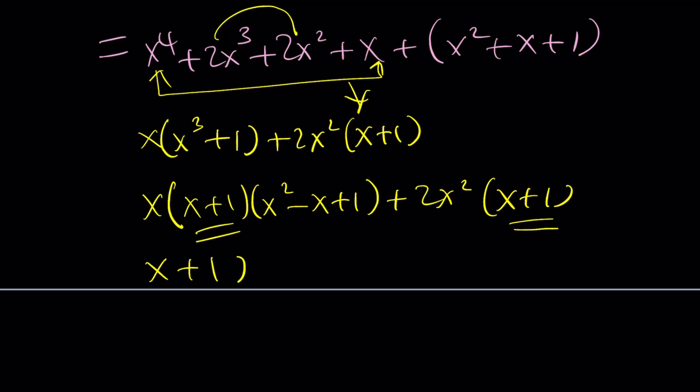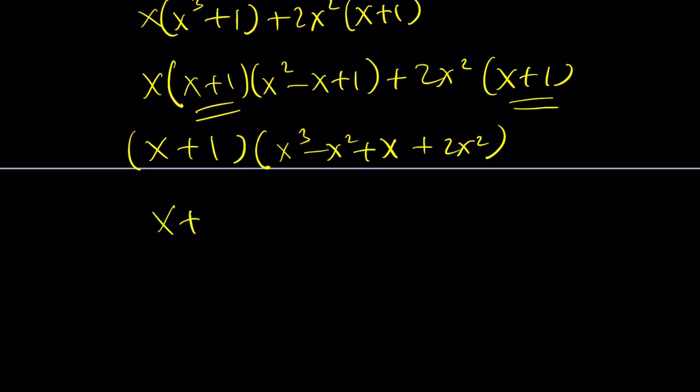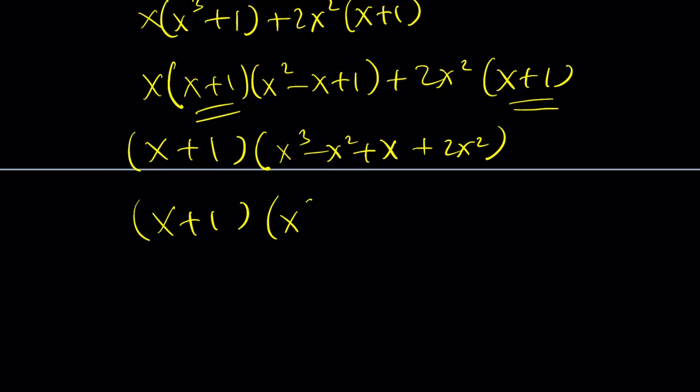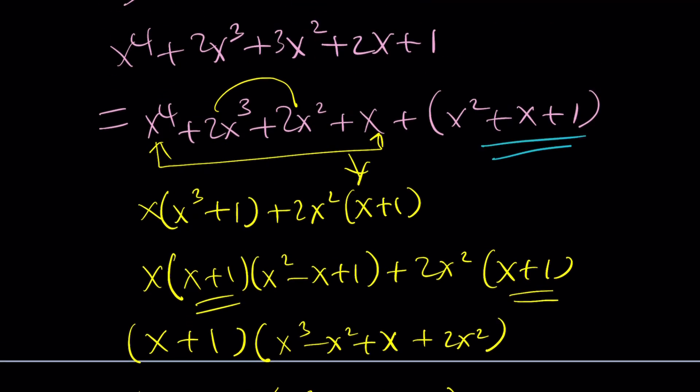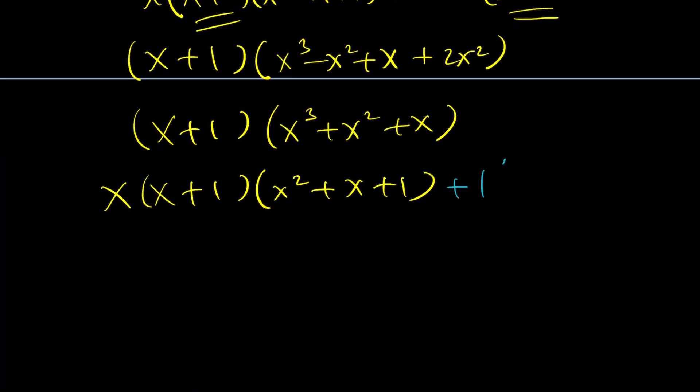Factor it out. And then I'm getting x cubed minus x squared plus x plus 2x squared. And that becomes x plus 1 times x cubed plus x squared plus x. Nice. Now we can take out an x. And this will be x squared plus x plus 1. And now I'm ready to add the last piece, which is this one. Which is 1 times x squared plus x plus 1. And guess what?